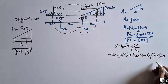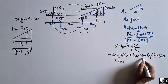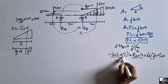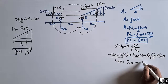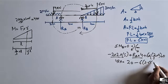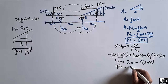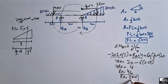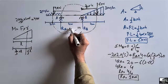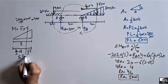Setting the summation of moments at B equal to zero and solving, we shift all terms except RA to the right side. We get 4RA equal to 20 minus 6 × 2.67, which gives 4RA = 4, so RA equals 1 kilonewton.